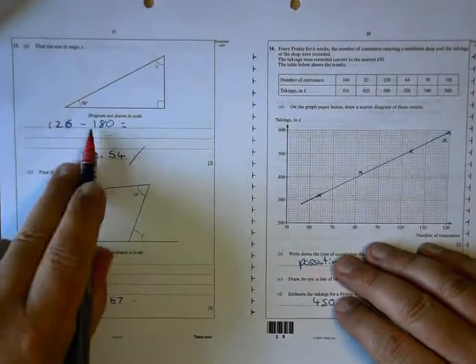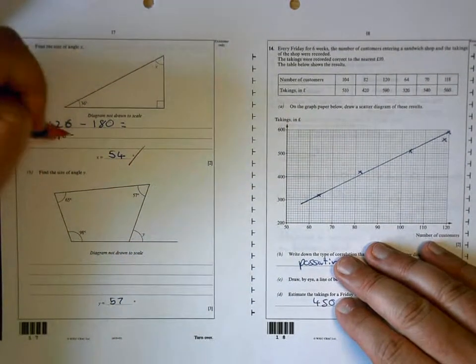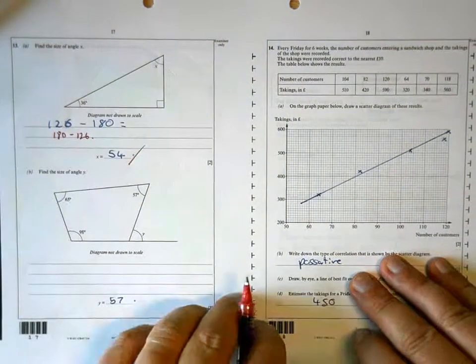54 is correct. You got this the wrong way around. It should be 180 take away 126, but it doesn't matter. You've got that right.